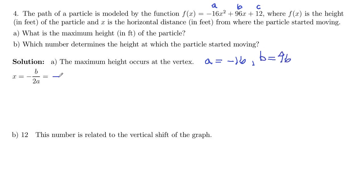So negative b over 2a will be negative 96, and then we'll be dividing by 2 times negative 16. So these two negatives will make a positive. 96 divided by 32 is equal to 3, so that's our x-coordinate of vertex.